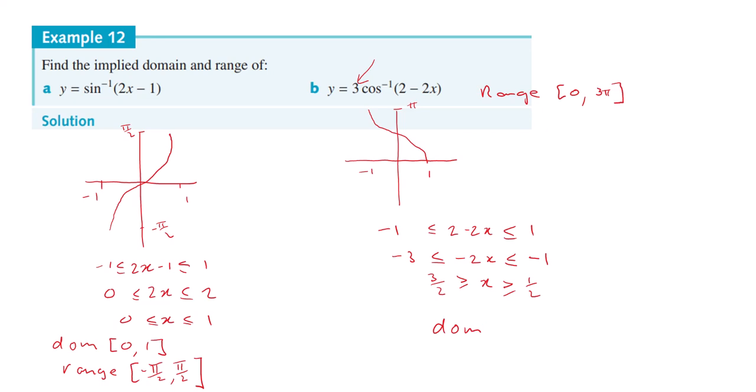And then write it the right way around. Your domain will be, always lowest to highest, between 1/2 to 3/2. And just for neatness, the range will be from 0 to 3π. Done.